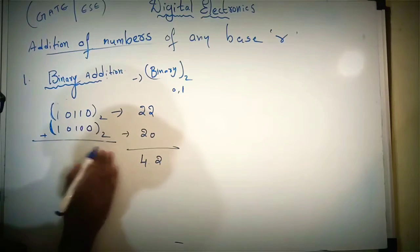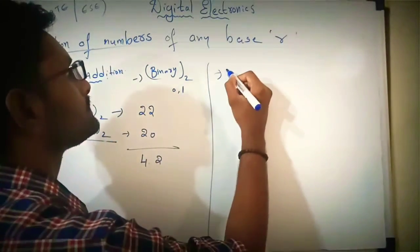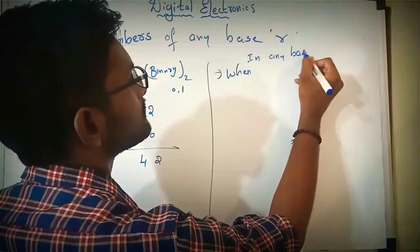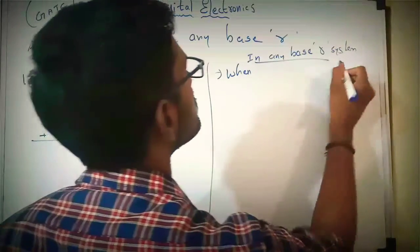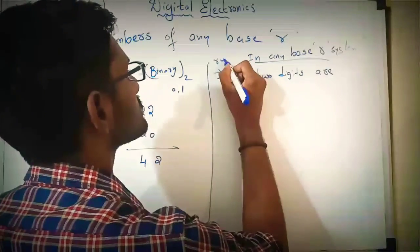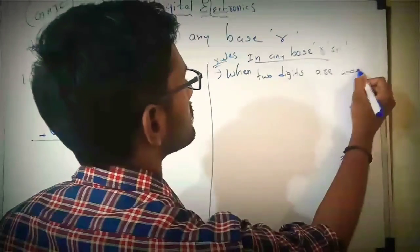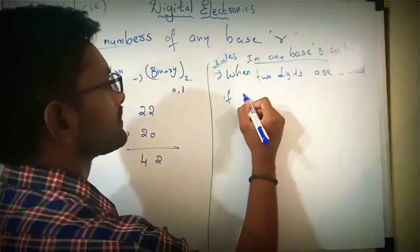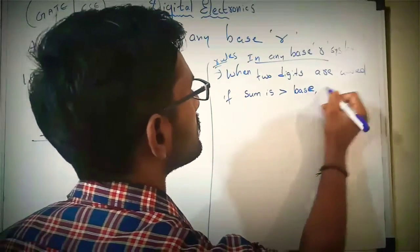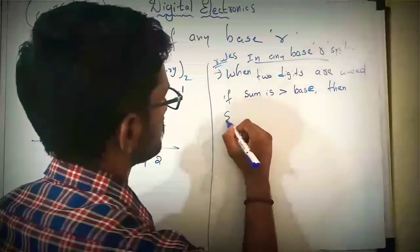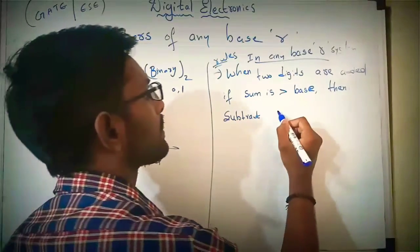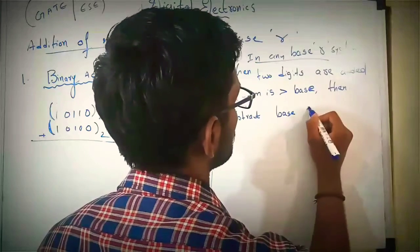0 plus 0 is 0. First of all see the rules. This is in any base system: when two digits are added, these are the rules to be followed. If the sum is greater than base minus 1, then subtract the base from the sum.